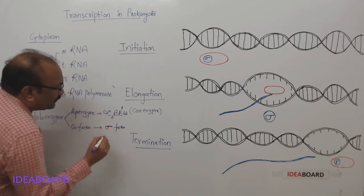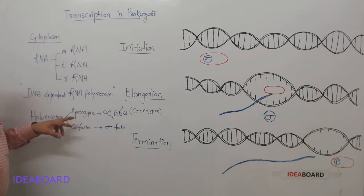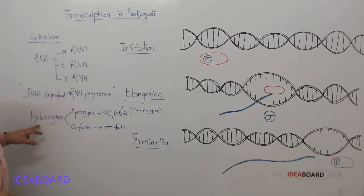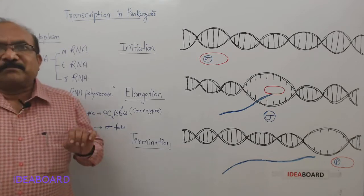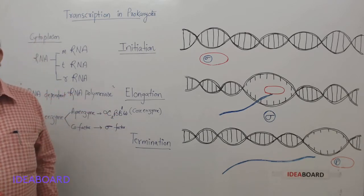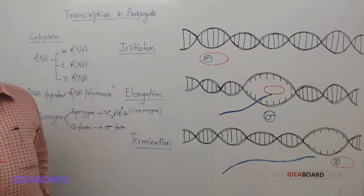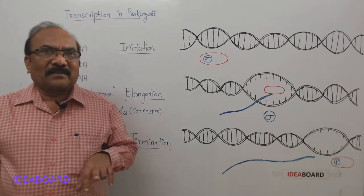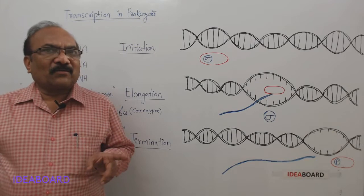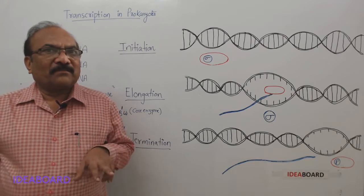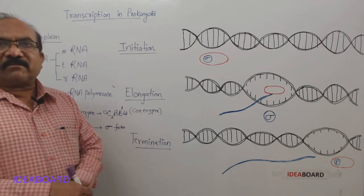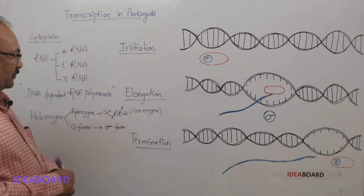Sigma factor. The core enzyme or apo enzyme together with sigma factor is called the holo enzyme. This holo enzyme will catalyze the reaction right from the beginning of the structural gene. That is why for initiation, the holo enzyme is required, not the core enzyme alone. But once it starts, the sigma factor is not at all required.